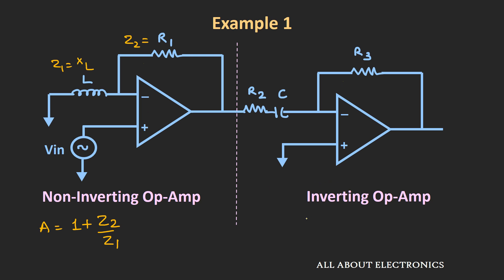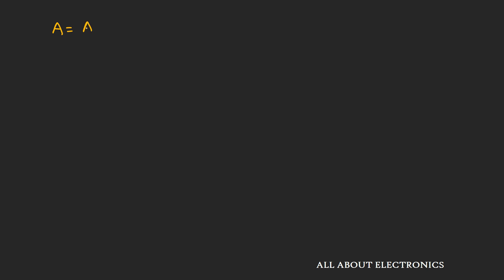Similarly, for the inverting op-amp configuration, we know that the gain can be given by the expression minus Z2 divided by Z1. For this particular portion, Z2 is equal to R3 and Z1 is equal to R2 plus Xc, where Xc is the reactance of the capacitor. We can say that the overall gain will be equal to the product of these individual gains.